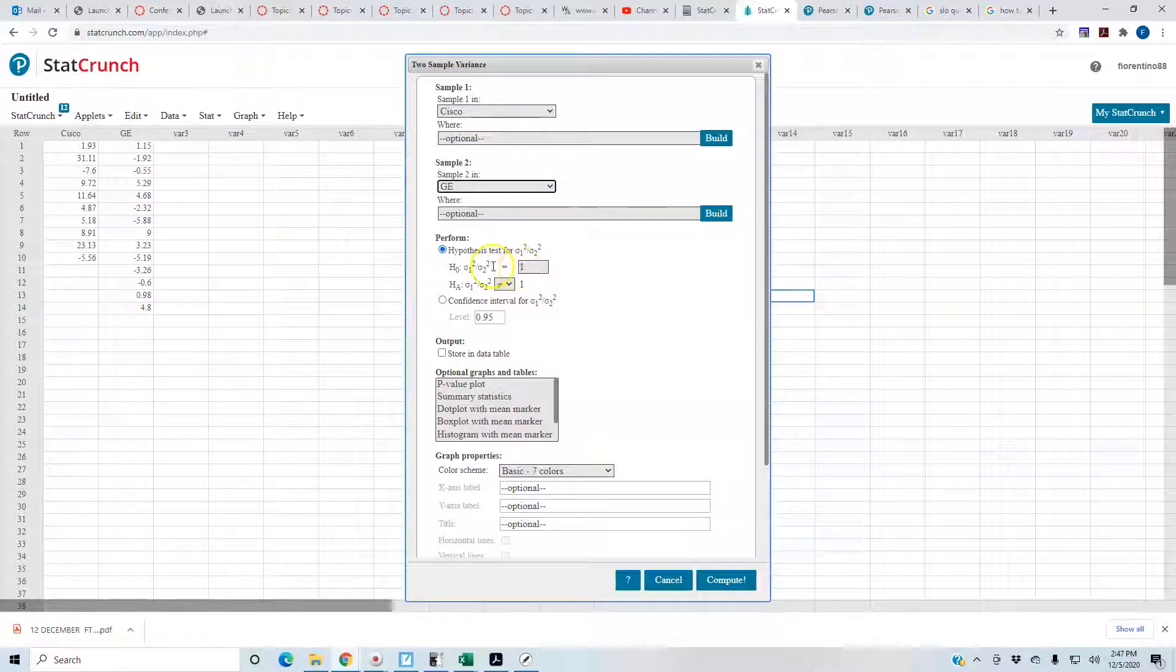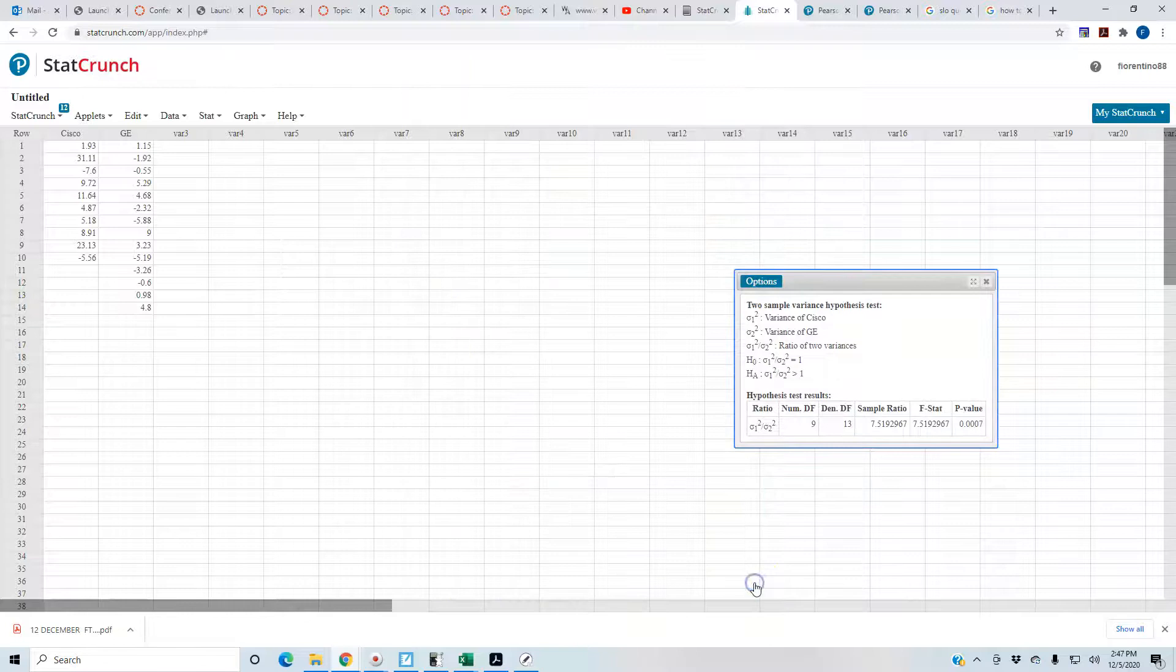According to our problem, this is going to equal one for our null hypothesis. For the alternative hypothesis, we need to make sure we know what our claim is, and that is greater than according to our problem. Then we're going to select Compute.